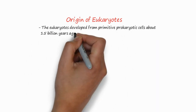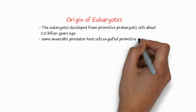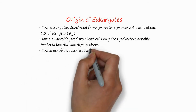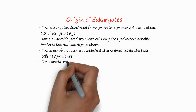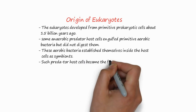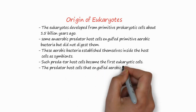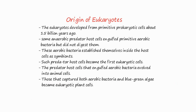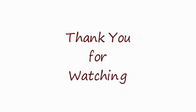How did eukaryotes originate? Eukaryotes developed from primitive prokaryotic cells about 1.5 billion years ago. Some anaerobic predator host cells engulfed primitive aerobic bacteria and did not digest them. These bacteria established themselves inside the host cell as symbionts. Such predator host cells became the first eukaryotic cells. The predator host cell that engulfed aerobic bacteria evolved into animal cells, while those that captured anaerobic cyanobacteria became plant cells. Thank you.